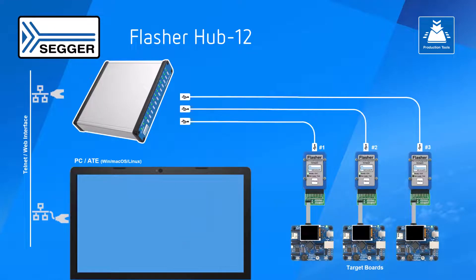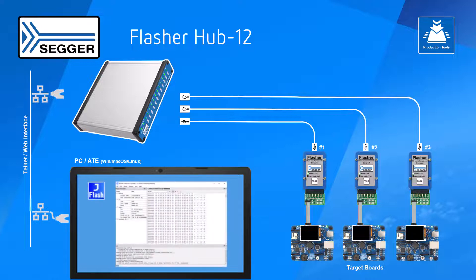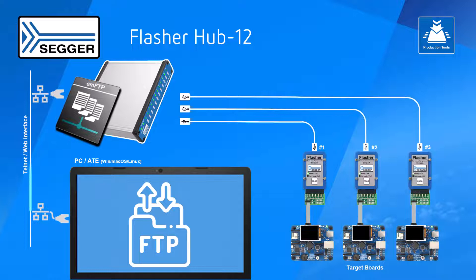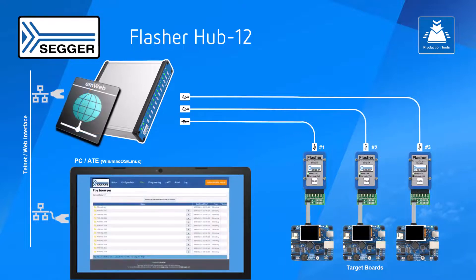There are three ways to provision the Flasher Compact modules connected to the Flasher Hub with the firmware to be programmed: either directly via SEGGER's JFlash programming software, via an FTP connection to the Flasher Hub 12's FTP server powered by SEGGER's MFTP server, or via drag-and-drop to the Flasher Hub 12's web interface powered by SEGGER's MWeb Embedded Web Server.